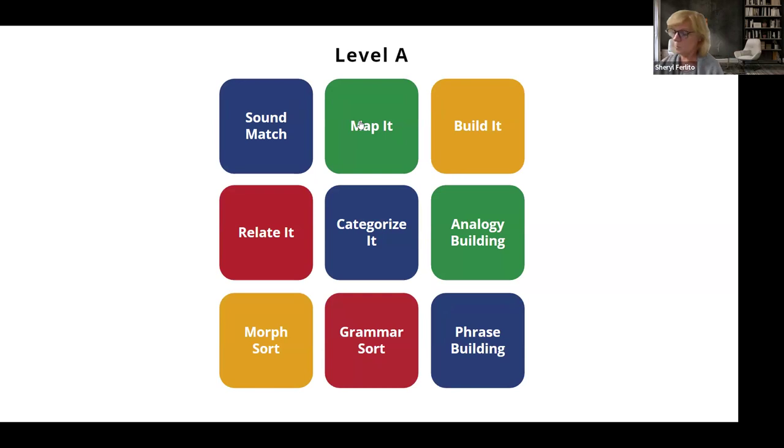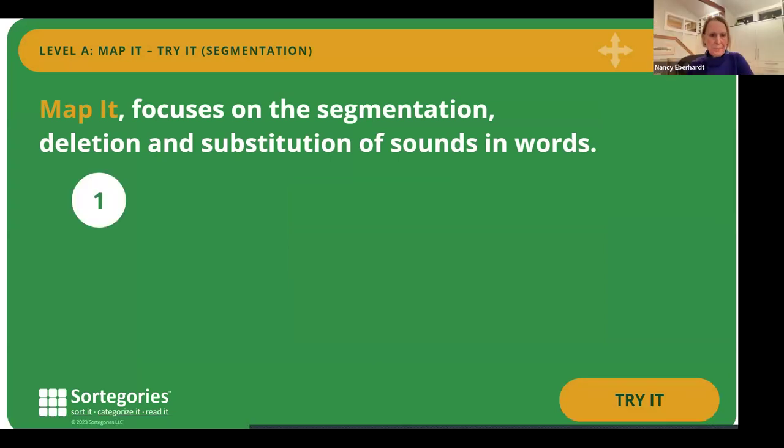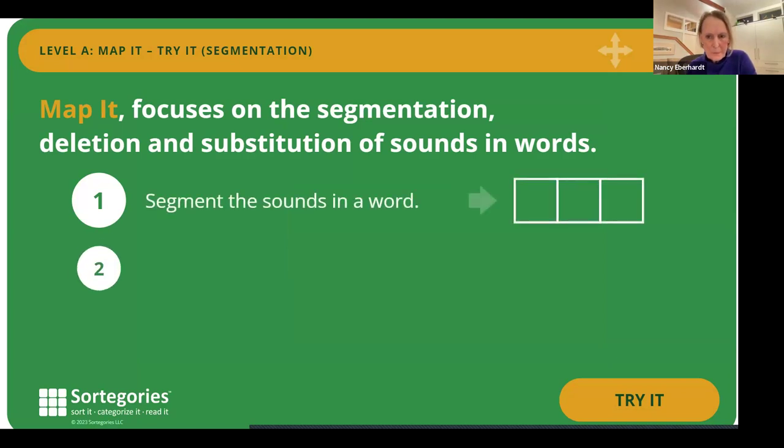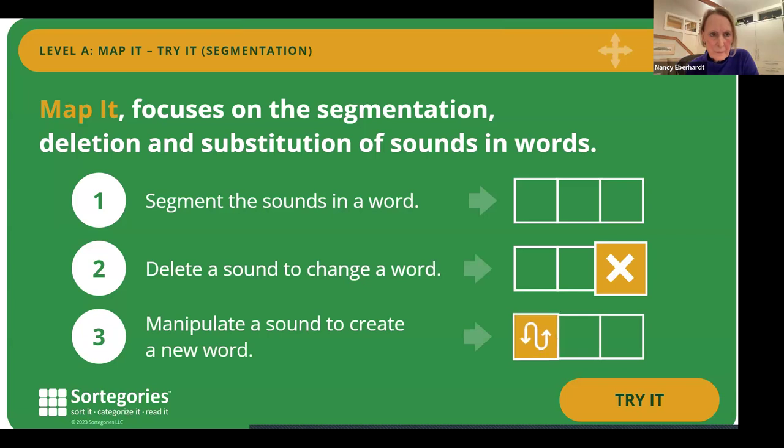Level A. Map-It. Level A Map-It focuses on the segmentation, deletion, and substitution of sounds in words. In the first task of Map-It, identify or segment each sound in a word. In the second task, remove or delete a sound to change a word. In the third task, change or manipulate a sound to create a new word. Click here to see how the heart lets you know the part that is tricky. Before you try it, click here to see an example.